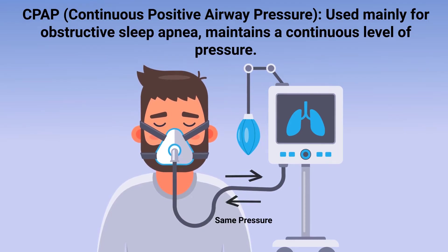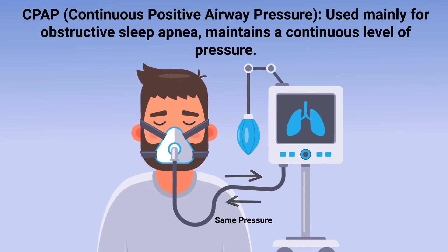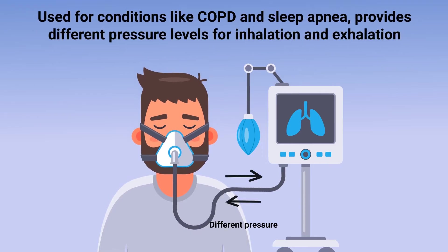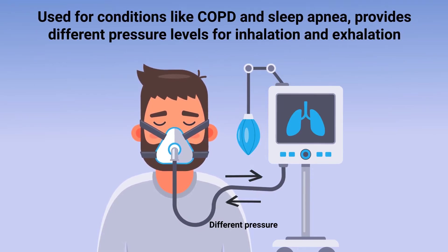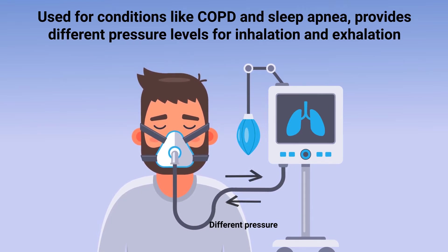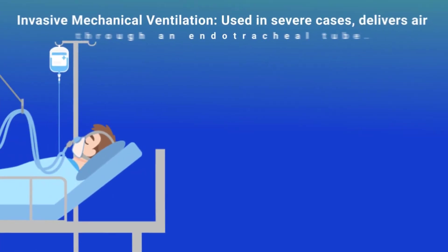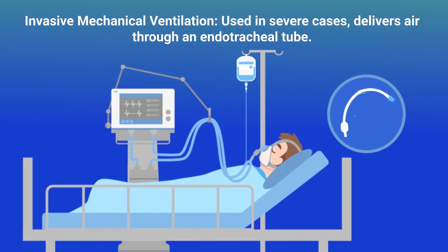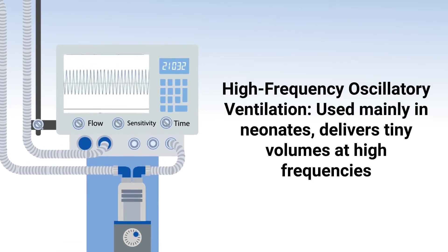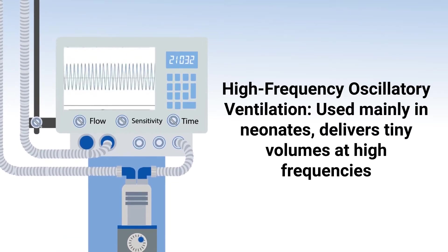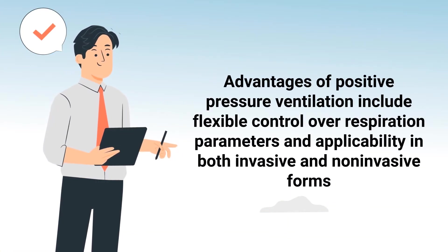BiPAP is used for conditions like COPD and sleep apnea, and provides different pressure levels for inhalation and exhalation. Invasive mechanical ventilation is used in severe cases and delivers air through an endotracheal tube. High frequency oscillatory ventilation is used mainly in neonates and delivers tiny volumes at high frequencies.